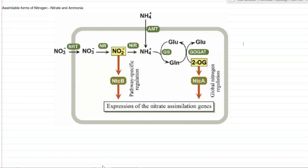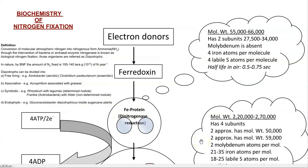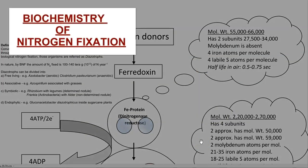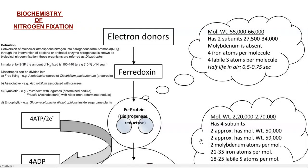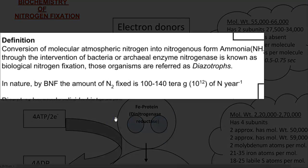First, we will try to understand how nitrogen is fixed by certain groups of bacteria. These bacteria are referred to as diazotrophs. Nitrogen fixation is also referred to as the biochemistry of nitrogen fixation. It is defined as the conversion of molecular atmospheric nitrogen into a nitrogenous form, that is ammonia, through the intervention of certain bacterial or archaeal enzyme systems referred to as nitrogenase. This process is technically referred to as biological nitrogen fixation, or BNF.